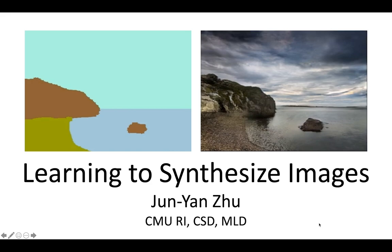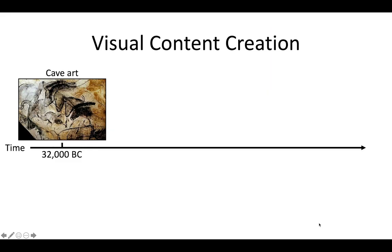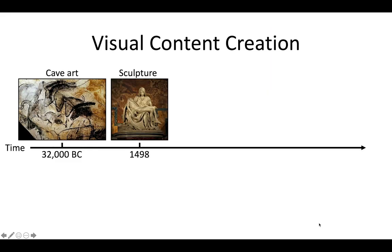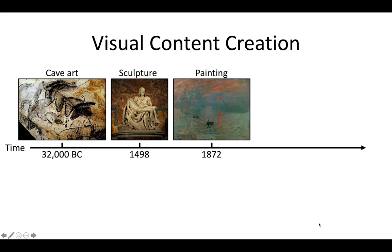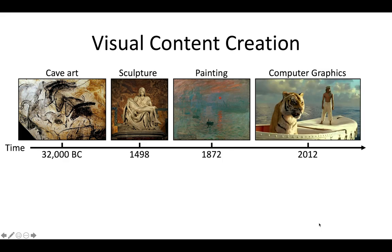Throughout history, people have created visual content in various forms, from the ancient cave art to micro-angular sculpture to the impressionist painting by Claude Monet. More recently, we have computer graphics. This is one of my favorite movies, Life of Pi, which tells the adventure story of a little boy with a giant Bengal tiger.